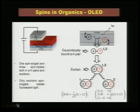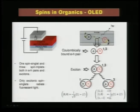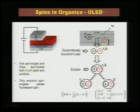Spins in organics are construed in this way. What is the mechanism of the organic LED? Electrons come from the anode and holes go from the cathode, and they combine. When they combine, they are first held by a coulombically bound electron-hole pair. The ratio 1:3 refers to 1 spin singlet and 3 spin triplets both in electron-hole pairs; they together combine as excitons.